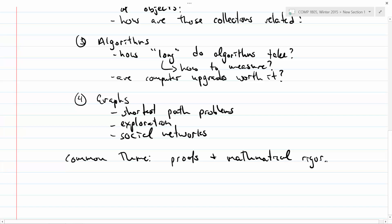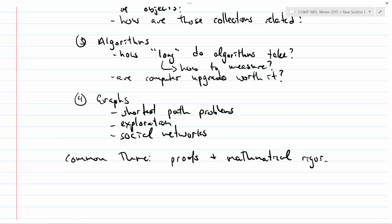The common thing between all four of these threads — logic, sets, algorithms, and graphs — is proofs and mathematical rigor. That's really what this course is all about. You're going to learn how to think like a mathematician, because math is a huge part of computer science. That's what computer science really is, and it's an important thing to take away from this course.